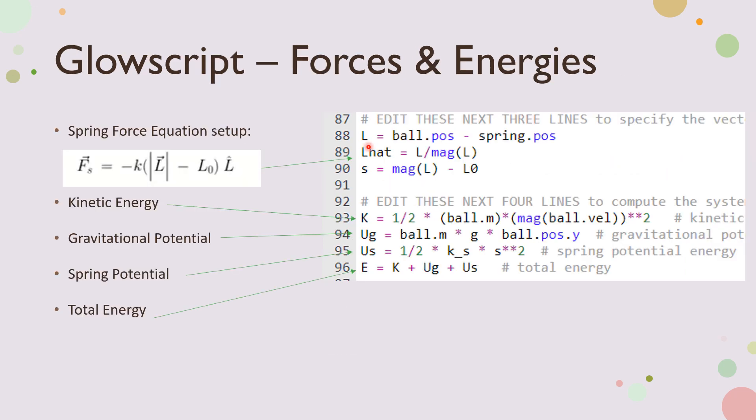And then this is the forces and energies in the GlowScript. We have the spring force equation set up here, so we define L, L hat, and S. And then we also have the kinetic energy, gravitational potential, spring potential, and total energy set up.